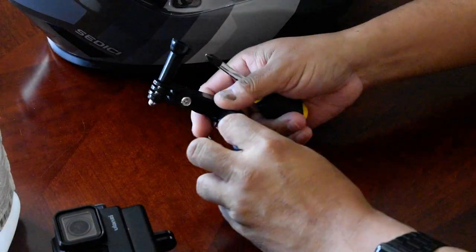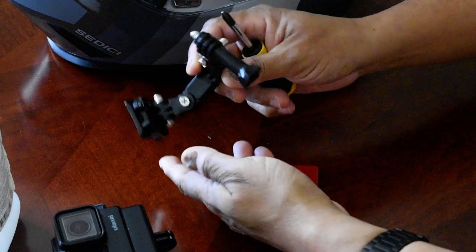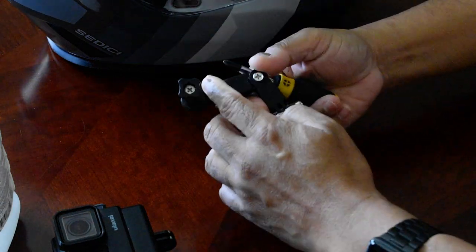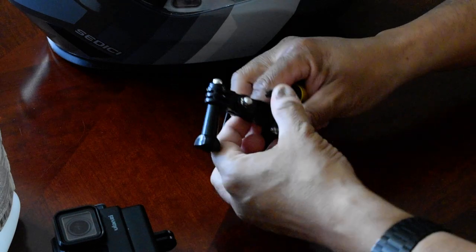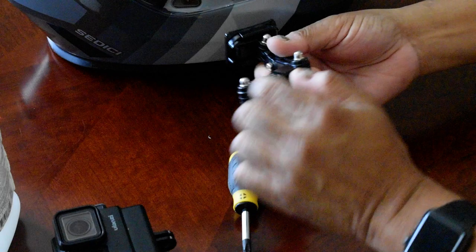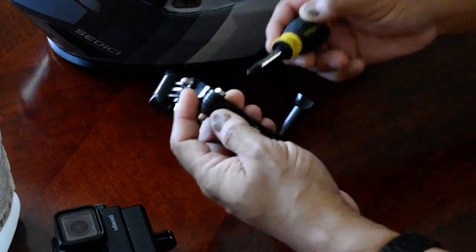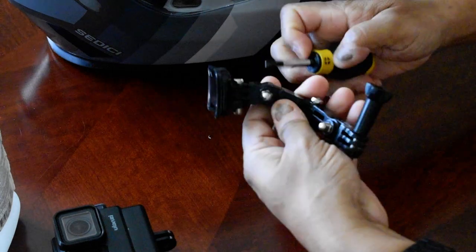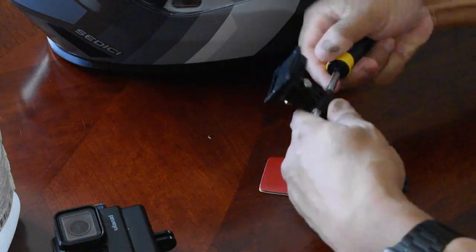Before we start, we need to orient this in the proper position to go on the side of the helmet. You can see it came from the manufacturer in the reversed position, so I need to slacken these screws here and orient it on the helmet the way I want it.